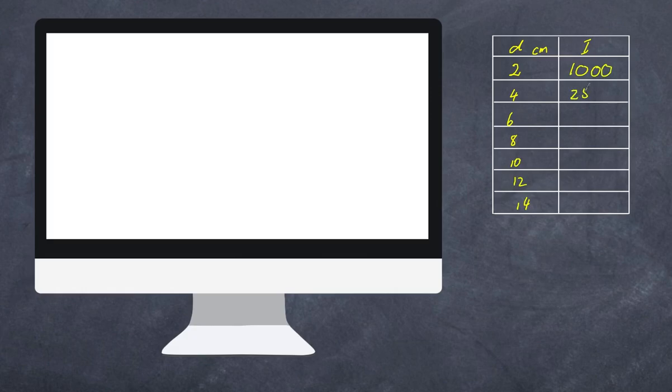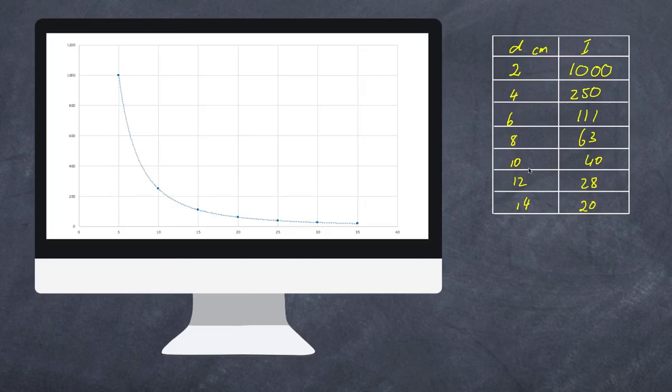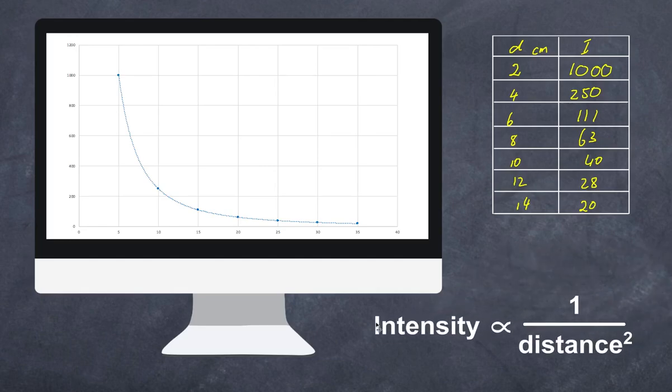And let's say you started at an arbitrary value of an intensity of a thousand units. You subsequently get 250, 111, 63, 40, 28 and 20. And then you did some analysis with the data and you got a graph that looks like this. And if you did the analysis, you would discover that the relationship between the intensity and distance was such that the intensity is proportional to one over the distance squared.